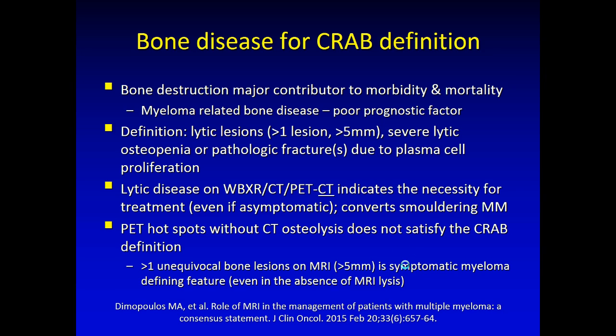When we think about bone disease and the CRAB definition, we're talking about bone destruction, because bone destruction is a major contributor to mortality and morbidity and is essentially a poor prognostic factor. Lytic disease is defined as more than one lesion, more than 5 mm in size, but also includes severe lytic osteopenia or pathological fractures ascribable to plasma cell proliferation. Lytic disease can be detected on whole-body x-rays, on CT scans, or on the CT component of a PET scan — not the PET scan abnormality itself, but on the CT component. Lytic disease indicates the necessity to start treatment, even if the patient is asymptomatic, and therefore converts smoldering multiple myeloma into active or symptomatic multiple myeloma.